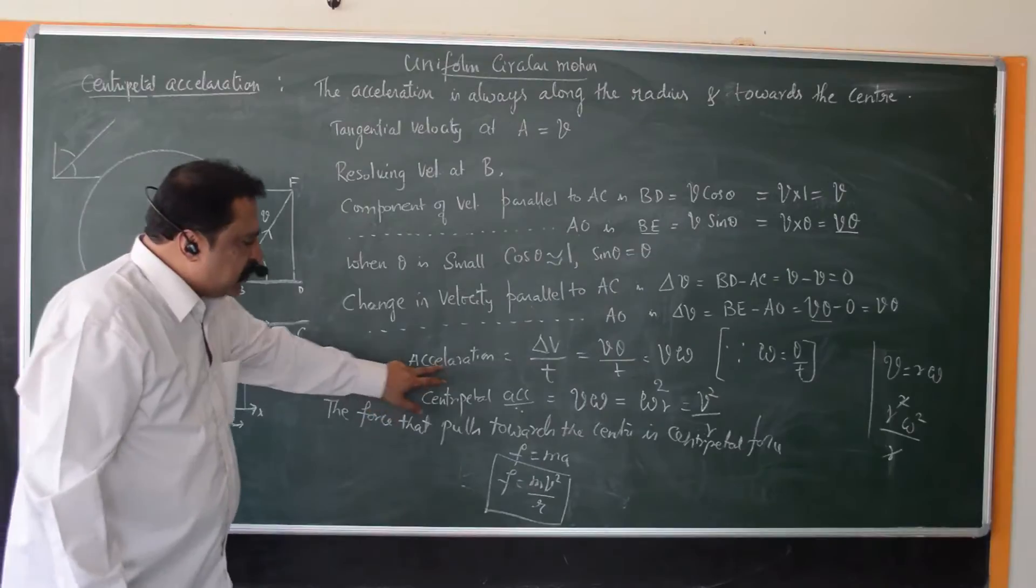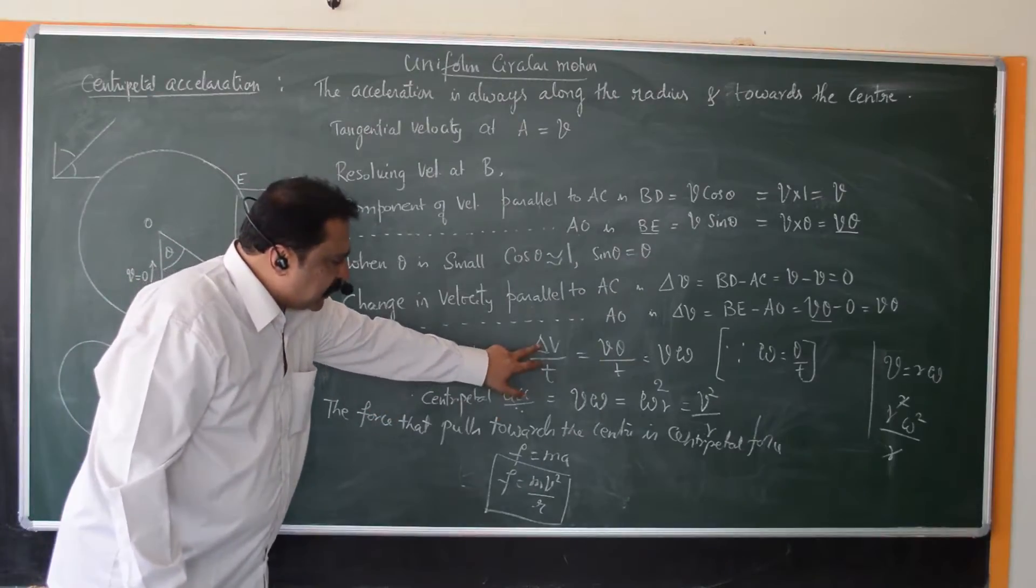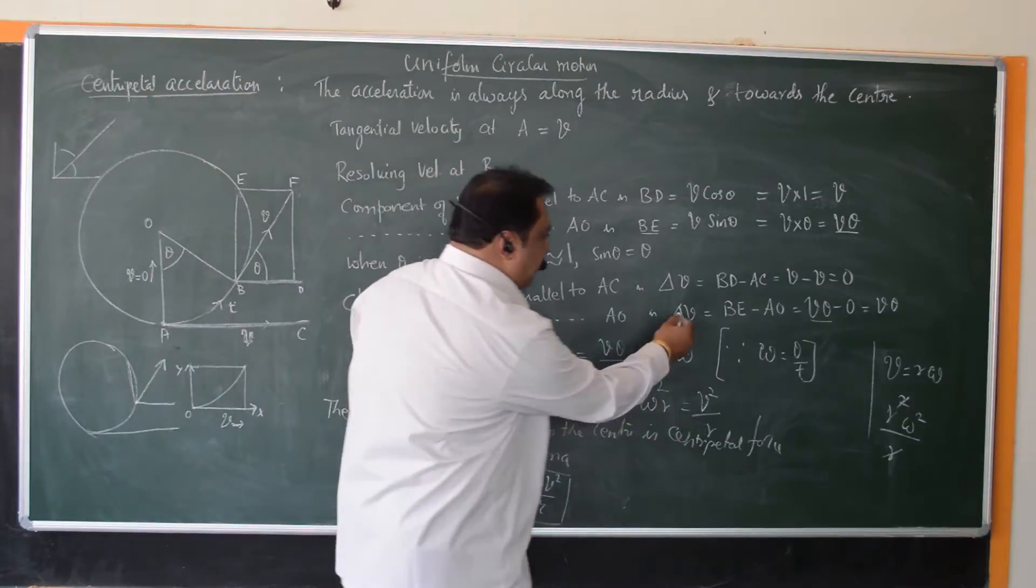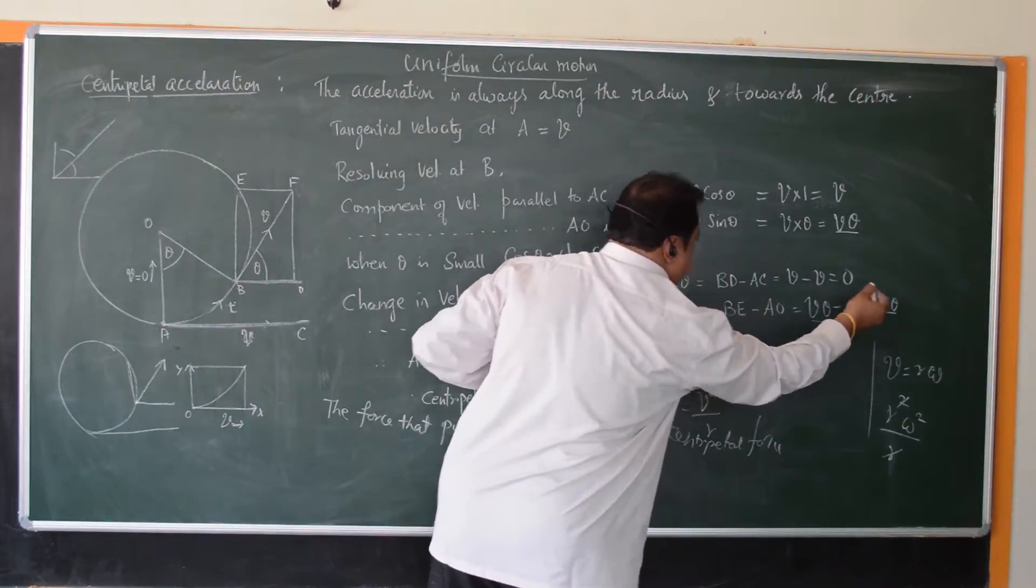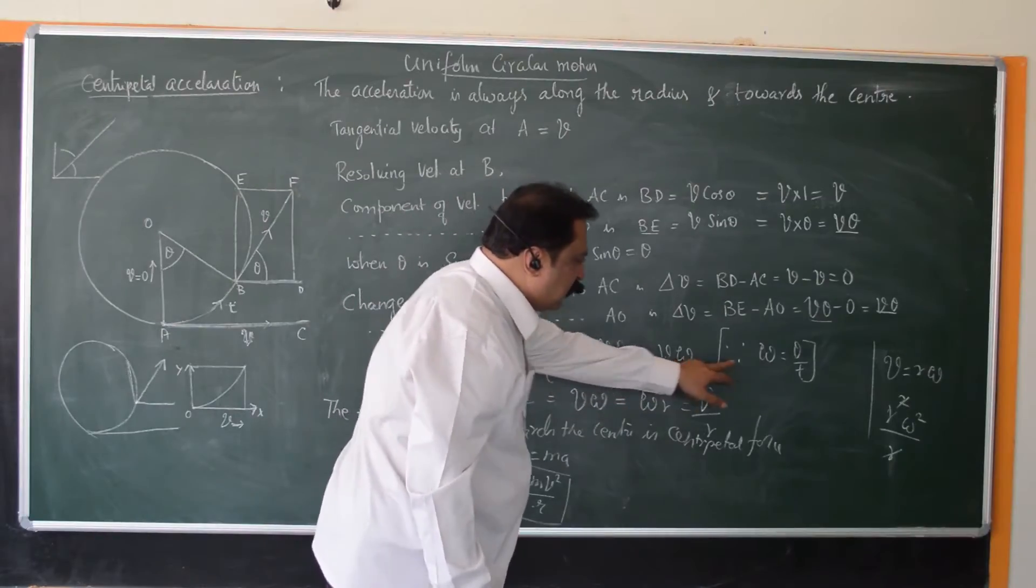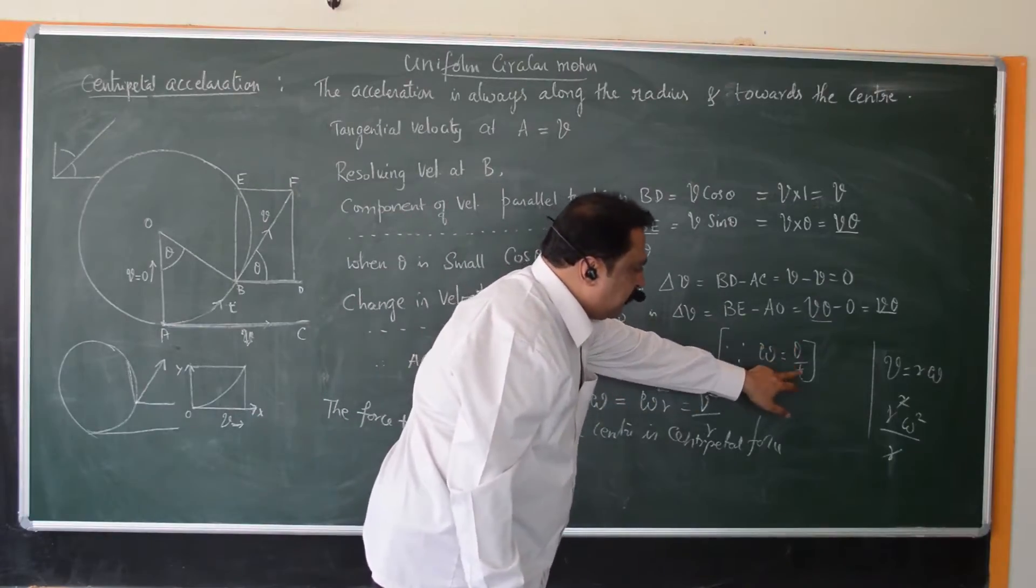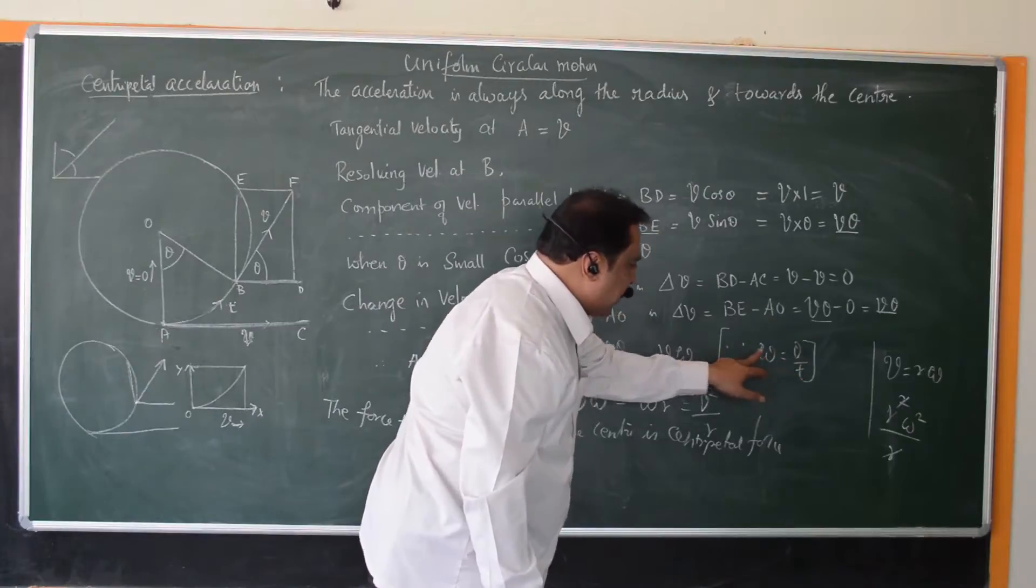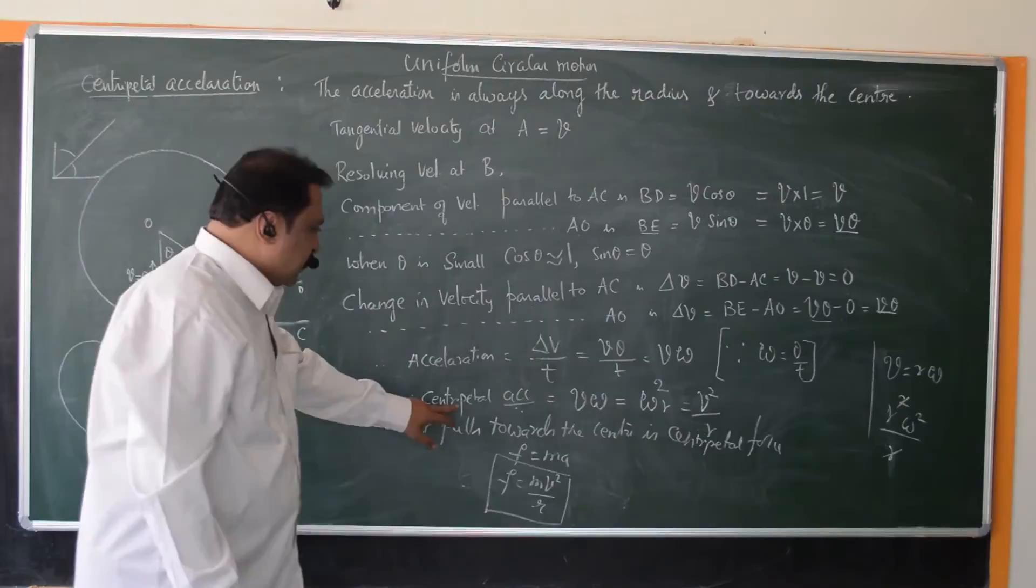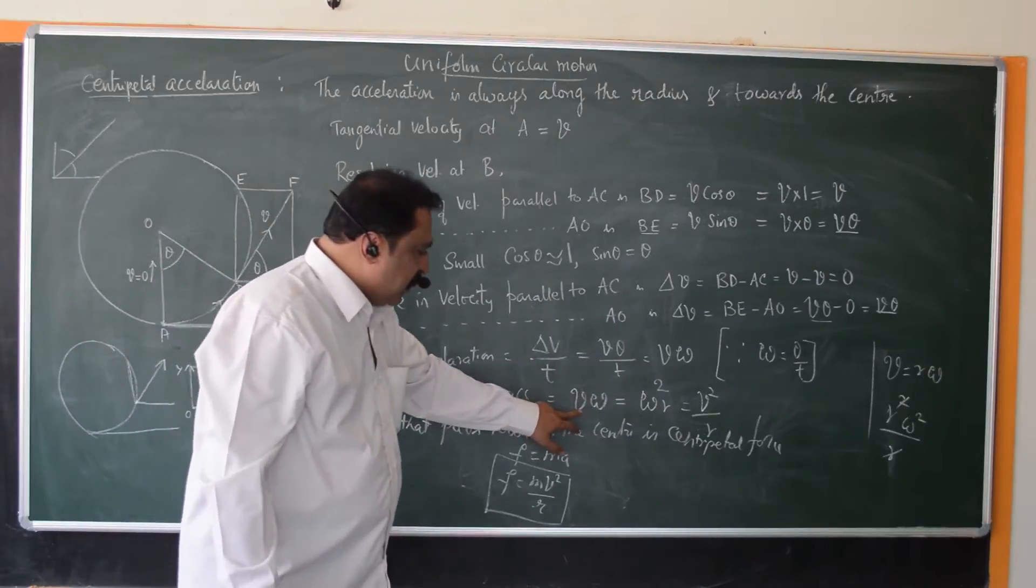Now we know that acceleration is rate of change of velocity, that is delta V by T. And what is delta V? We got delta V as V theta divided by T. That is V into omega. Because you know that theta divided by T, angular displacement by time, is nothing but angular velocity. So V omega. So centripetal acceleration is V omega.